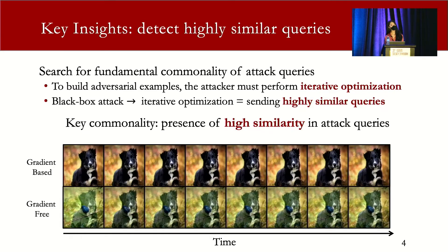Here is an example of two attack sequences generated by different attack designs: gradient-based and gradient-free. We can see that in both attack sequences, the attack queries are highly similar to each other at the pixel level. Usually, benign users won't send these pixel-level highly similar queries, so this could be a way for us to detect these attack queries.